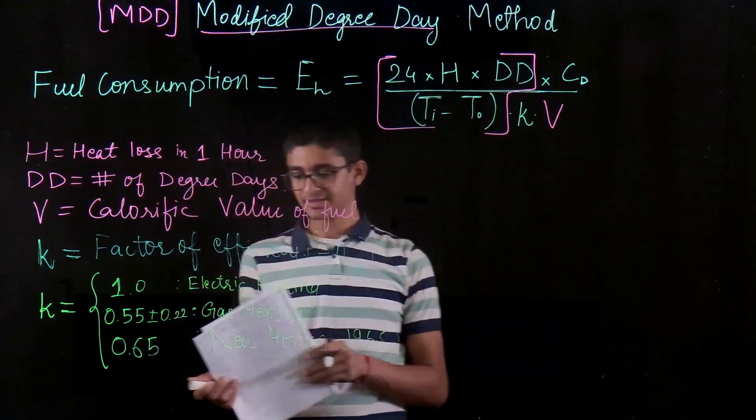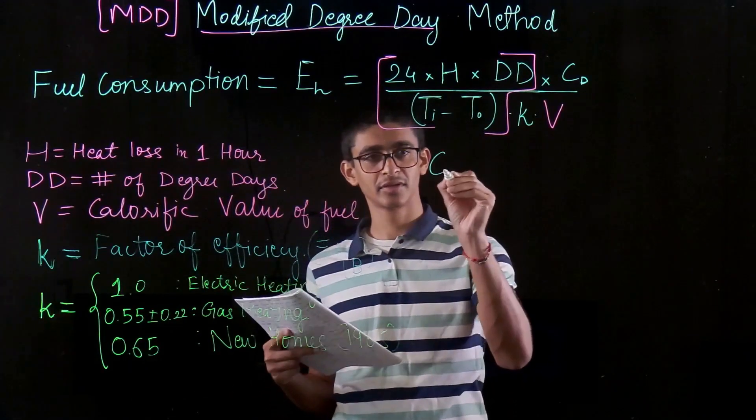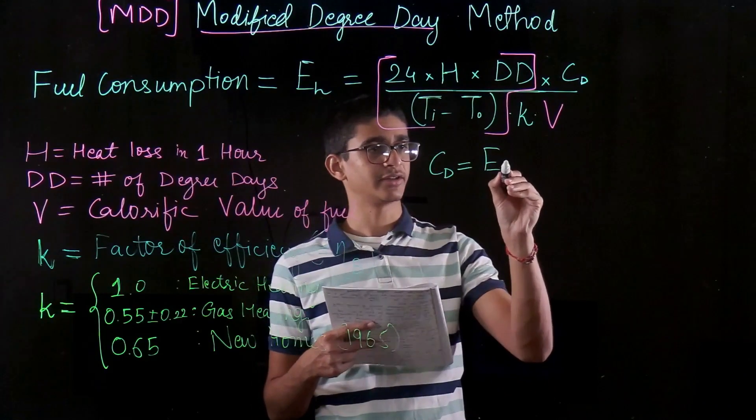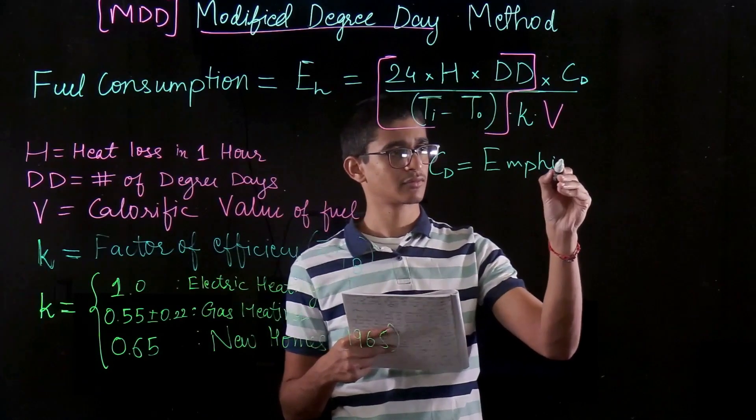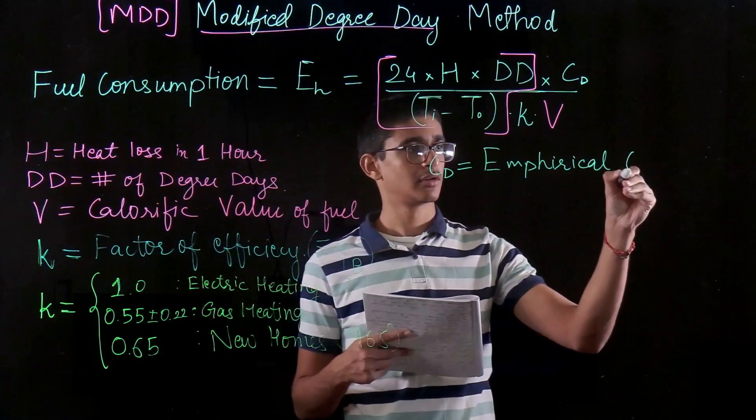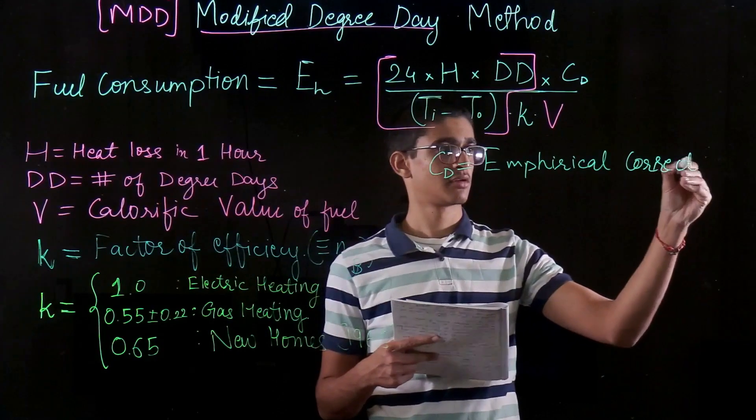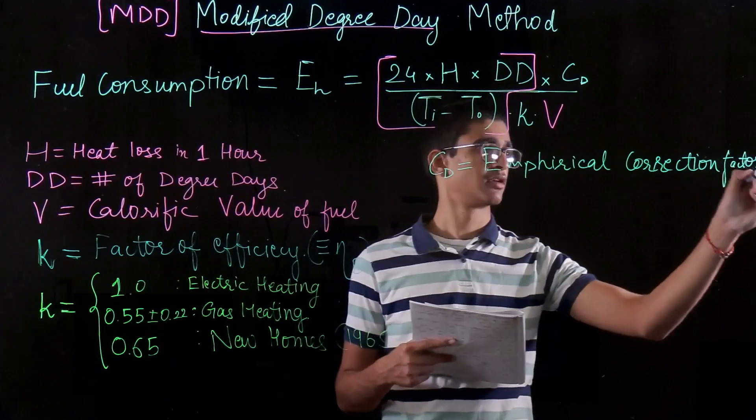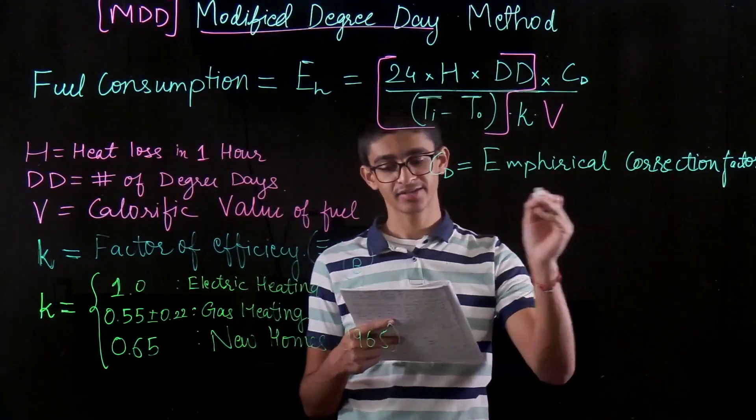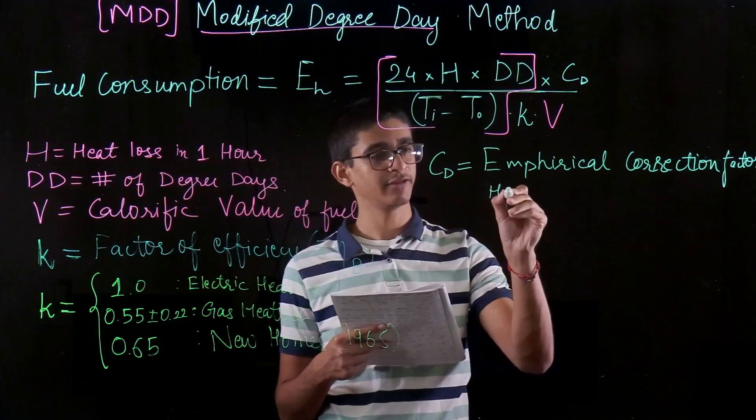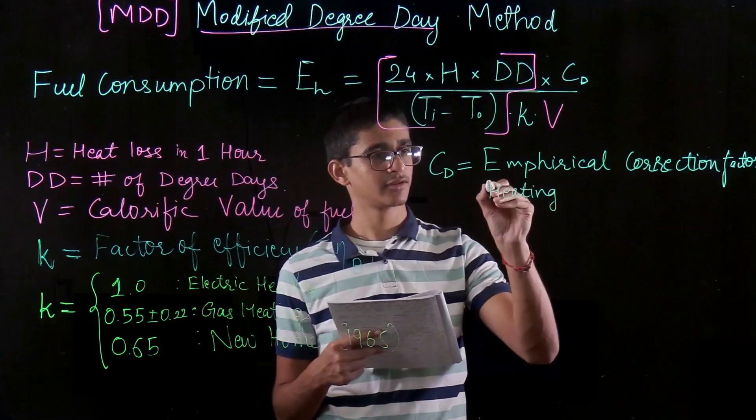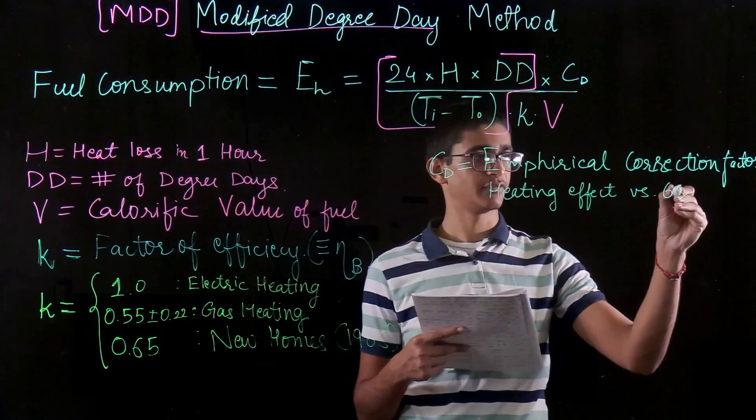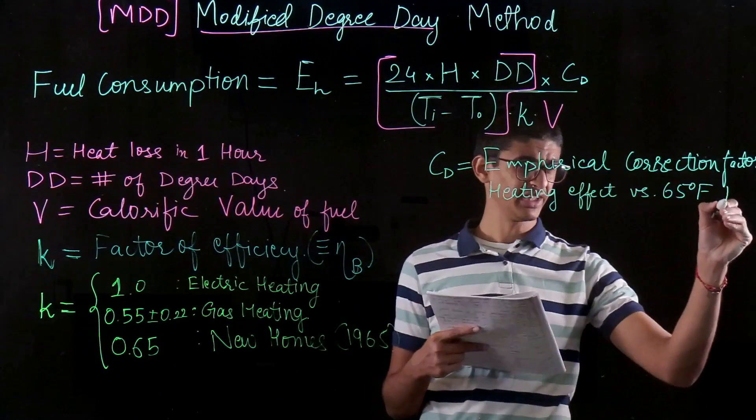And the CD is one of the most interesting things. CD is an empirical correction factor. And that correction factor takes into account the heating effect, the actual heating effect versus the 65 degree Fahrenheit heat degree days.